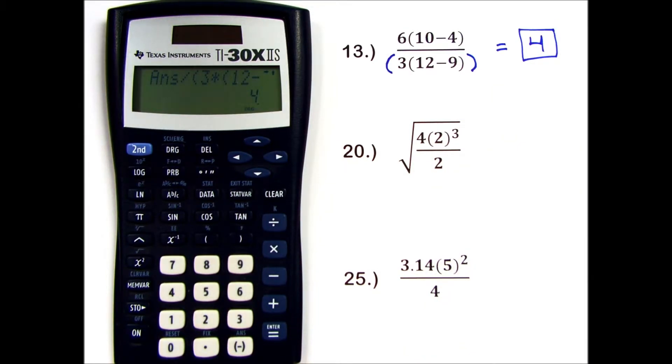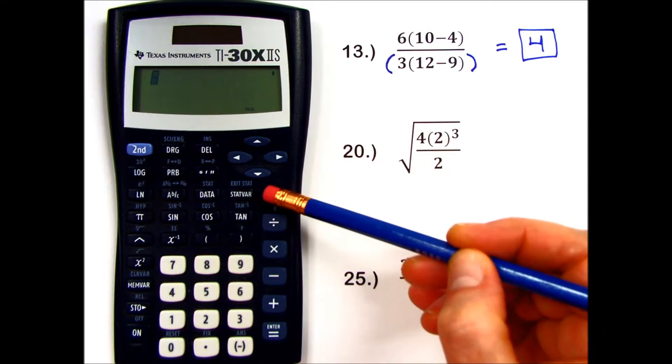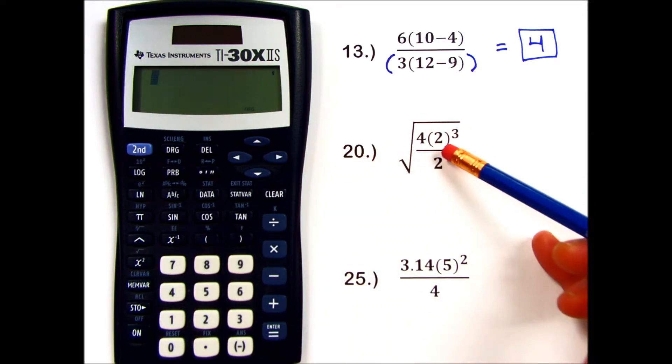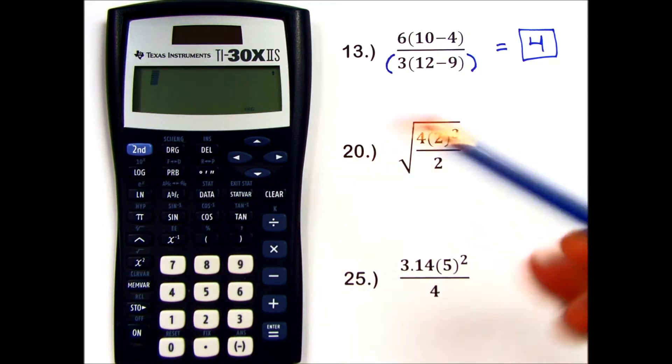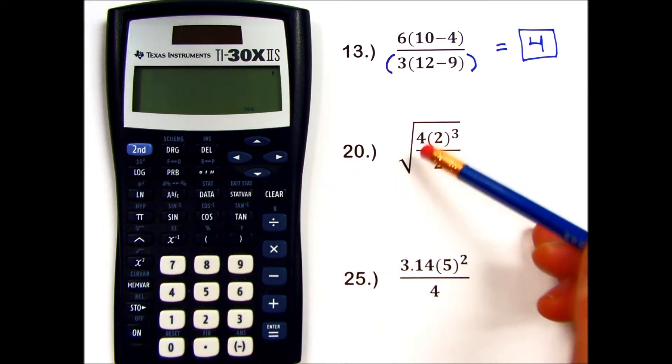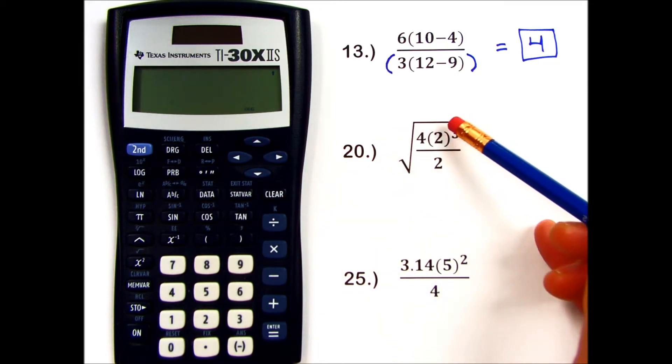Okay, let's try number 20. I have a square root with multiple operations on the inside. With this calculator, I can enter the square root symbol first.